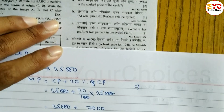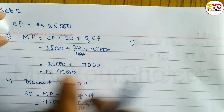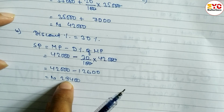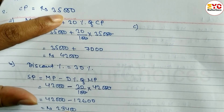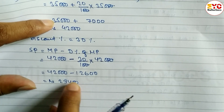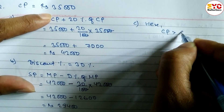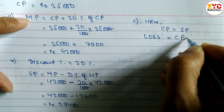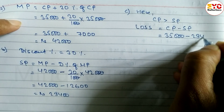Now part C: what is the profit or loss percentage on the cycle? CP is 35,000. Roshni sold the cycle at 29,400. Since CP is greater than SP, there is a loss. Loss formula: Loss = CP minus SP.